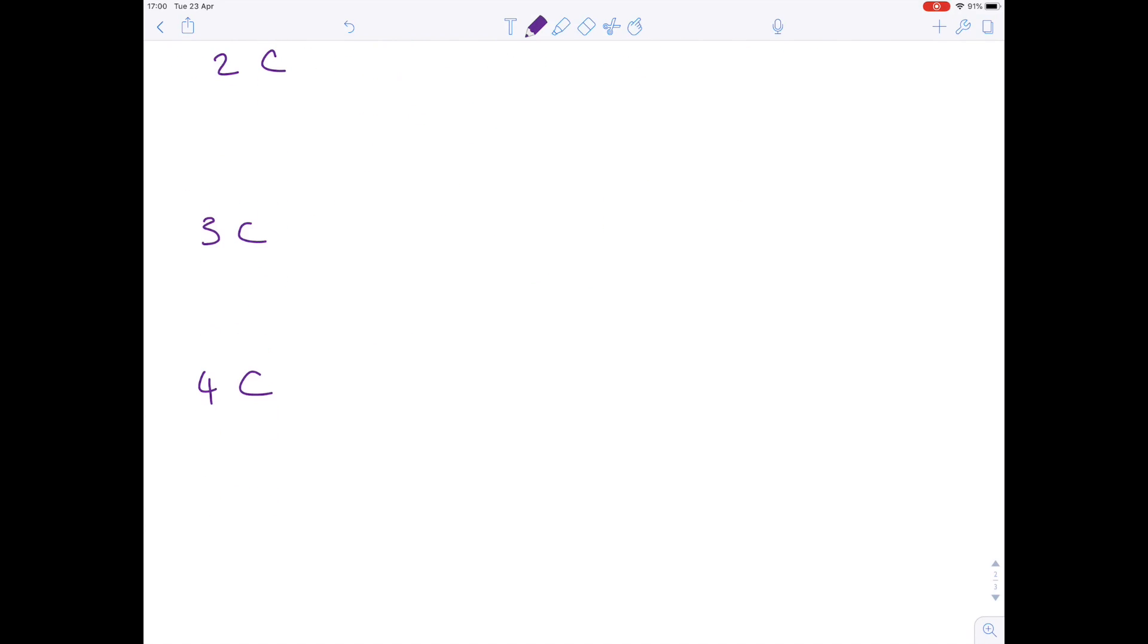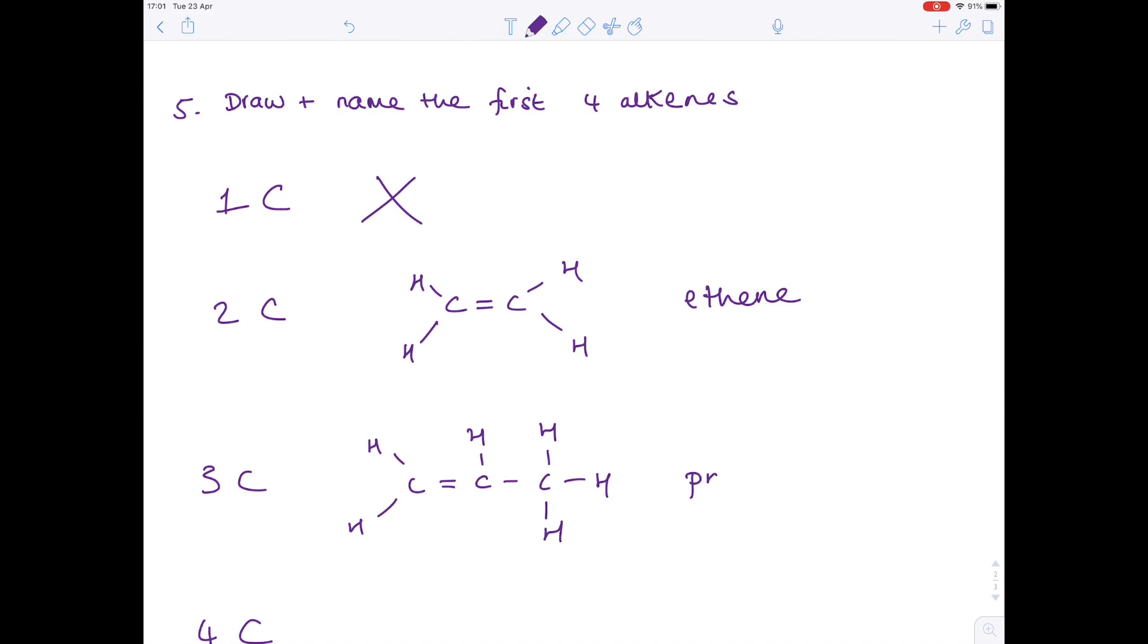We're going to draw them now. We need the double bond. Remember that each carbon forms four bonds, which is why your final formula looks like this. It's called ethene. Drawing now one with three carbons. Again, double-check your bonds. Your three-carbon alkene looks like this. This is propene.